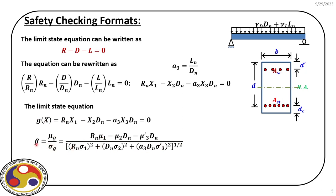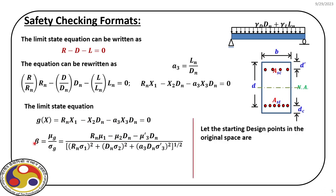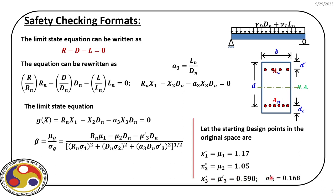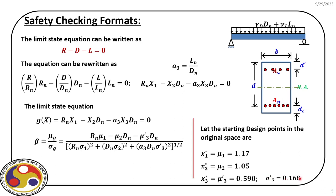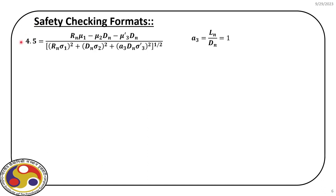Since this is a linear equation, we can use Cornell's definition. We find μ_G by putting mean values of X₁, X₂, X₃ into g(X), and we find σ_G using the corresponding expression in the denominator. Using these two expressions we can find β. In the forward problem we use statistics of the random variables to estimate β, but here β is given as 4.5, so we use that value. We start our design by considering the design point as the mean — for X₁ the mean is 1.17, for X₂ it is 1.05, and for X₃ (a non-normal variable) we use the equivalent mean of 0.59 and equivalent standard deviation of 0.168.